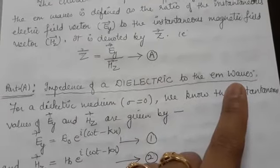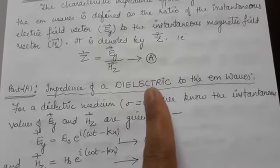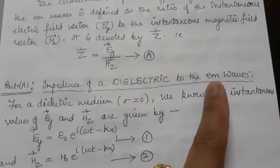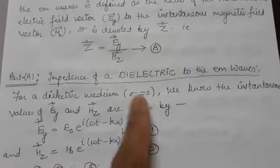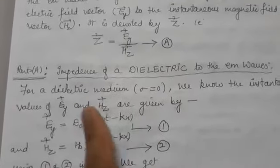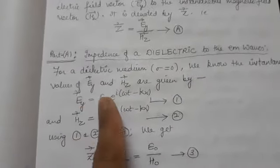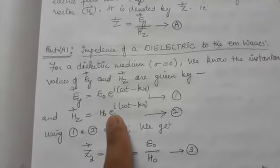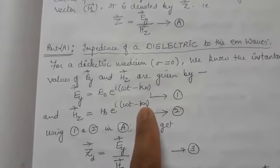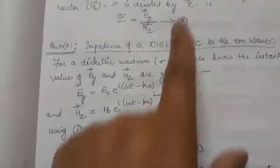Part A is the impedance of a dielectric to the electromagnetic wave — how much impedance is offered by a dielectric to the incoming electromagnetic wave when it passes through. A dielectric medium is one for which conductivity sigma is zero. For such a medium, we already have expressions for the electric and magnetic fields: EY = E₀ · exp(iωt − Kx), and HZ = H₀ · exp(iωt − Kx), where K = 2π/λ is the wave vector.